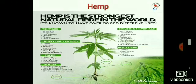Hemp fiber is obtained from the hemp plant. Hemp is the strongest natural fiber in the world and is known to have over 5000 different uses. It grows well in loamy soil. It is tough and used to make ropes, carpets, socks, bags, cloths, and paper. A special kind of plastic is also made from hemp fiber.